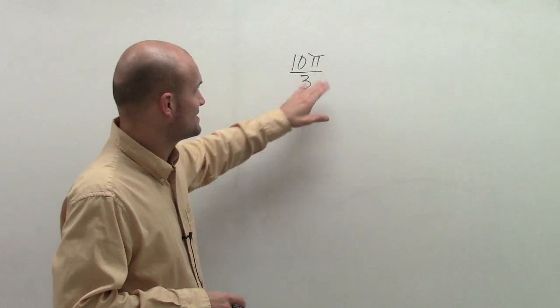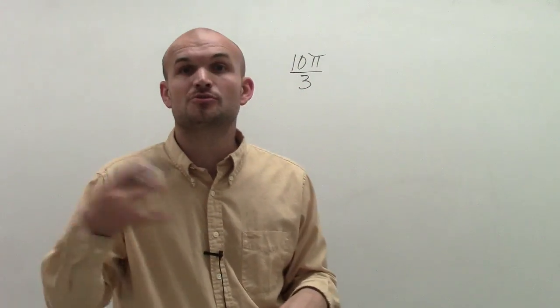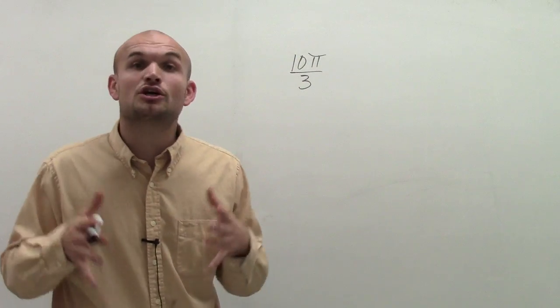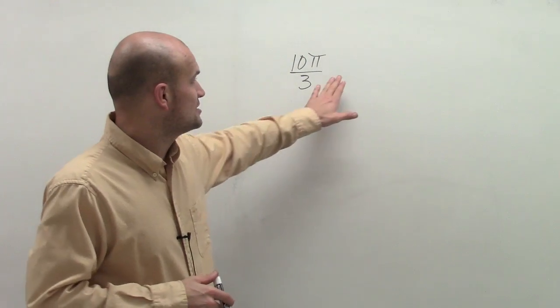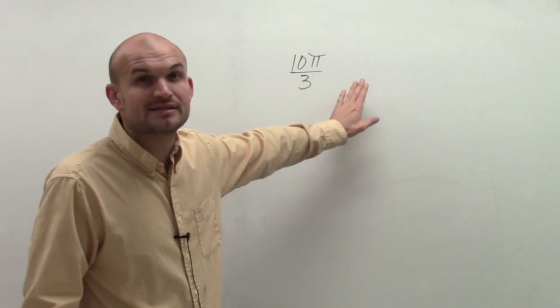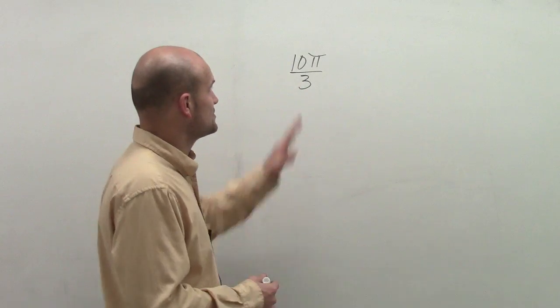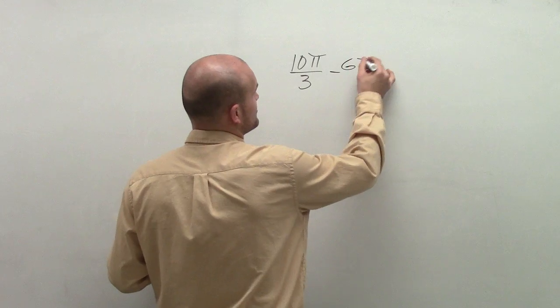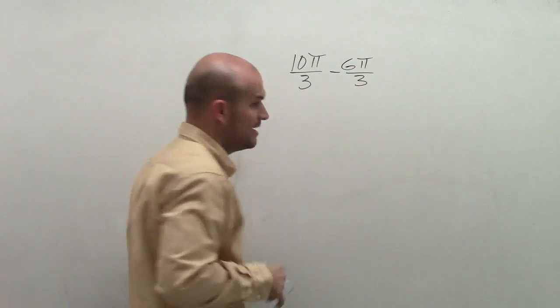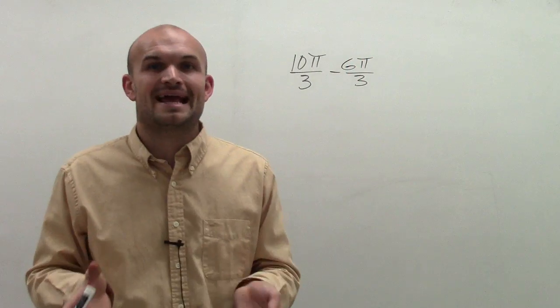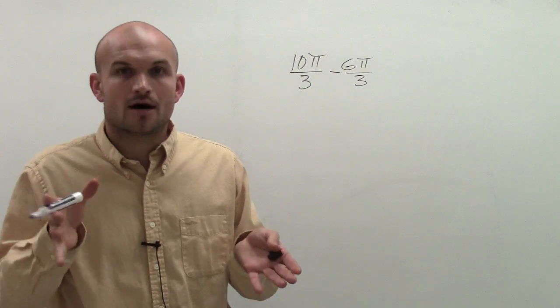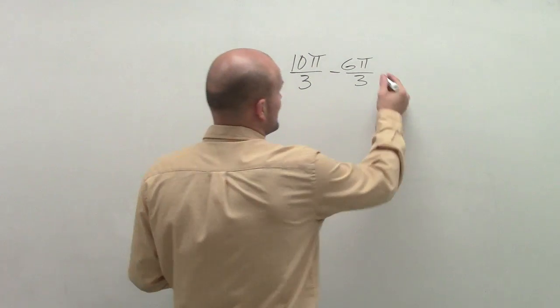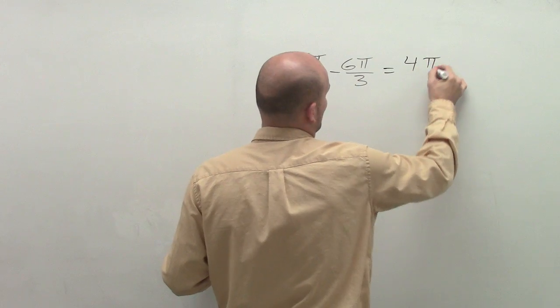So the one thing I notice about this angle is it's above 2π. What I want to do is find a coterminal angle that's going to be between 0 and 2π. So I'm going to first subtract 2π, which in this case would be 6π/3, so I can at least get an angle between 0 and 2π. When I subtract, what I get is 4π/3.